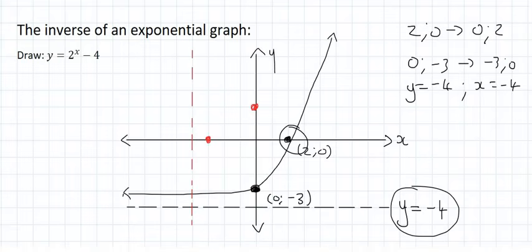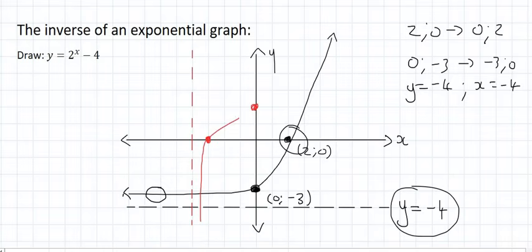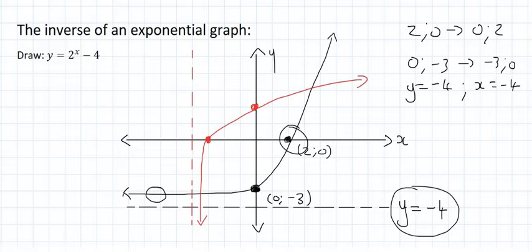So notice how on the original graph it gets very close to the asymptote. Well, the same will happen with the inverse. It will also get very close to its asymptote. So it will do something like that. And so that is the inverse of an exponential graph. You may or may not have heard about this type of function yet. But we call this a log graph.